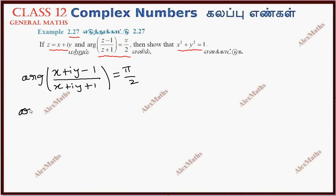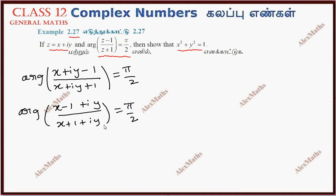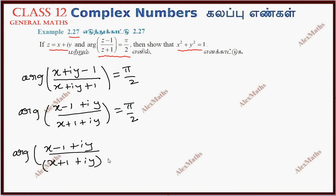Now we can rearrange. We have the argument of (x plus iy minus 1) divided by (x plus iy plus 1) equal to pi by 2. Now we have to convert to standard form. To do that, we multiply the denominator by its conjugate. The conjugate means opposite sign, so that is x plus 1 minus iy.